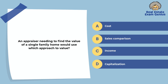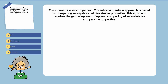An appraiser needing to find the value of a single family home would use which approach to value? Cost, sales comparison, income, or capitalization. The answer is sales comparison. The sales comparison approach is based on comparing sales prices paid for similar properties. This approach requires the gathering, recording, and comparing of sales data for comparable properties.